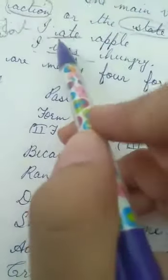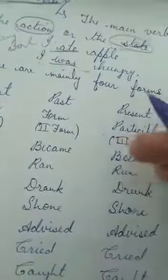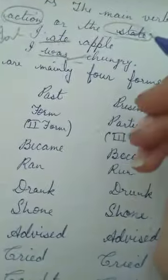For example, 'I ate apple' — here 'ate' is the work, so it's an action. Now consider 'I was hungry.' You might say this is a helping verb, but students, this is a main verb. Earlier I told you that helping verb helps main verb. In this sentence there is no other main verb — we have used 'was' as a stative verb.